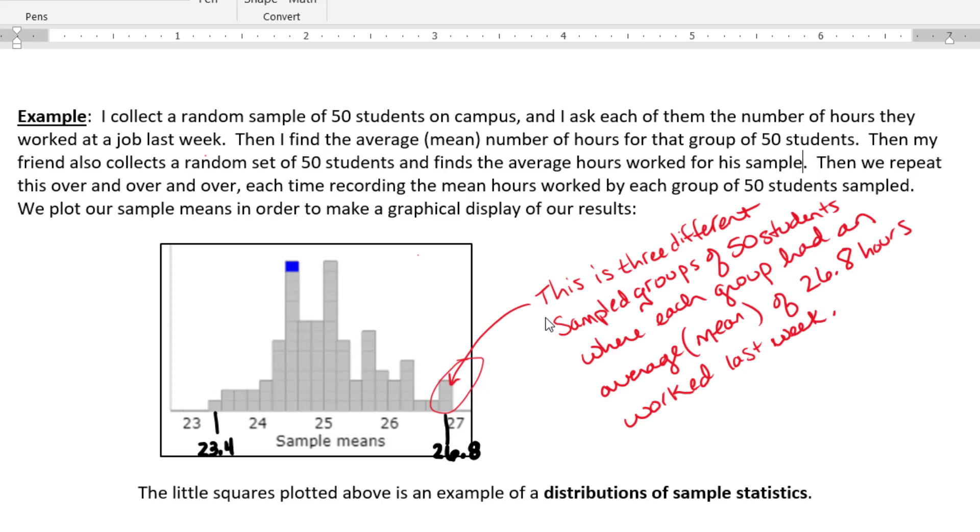So this is three different sampled groups of 50 students where each of those groups had an average of 26.8 hours worked last week. Down here, there was only one group of 50 students that had an average of 23.4 hours worked last week. So again, each little square in this graph represents a sample statistic from one set of 50 sampled students.